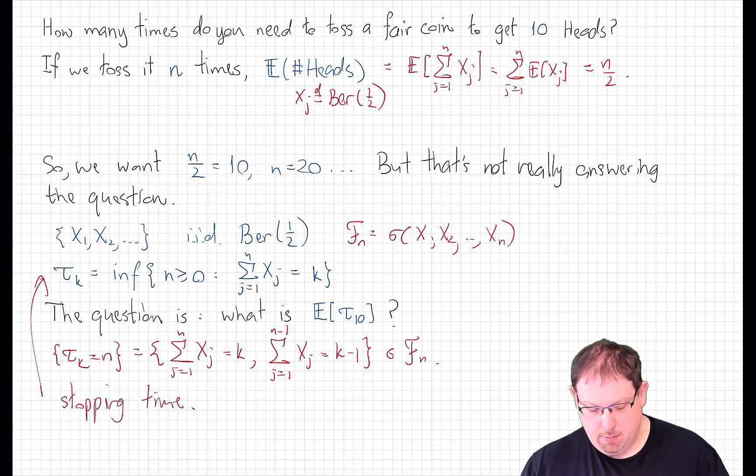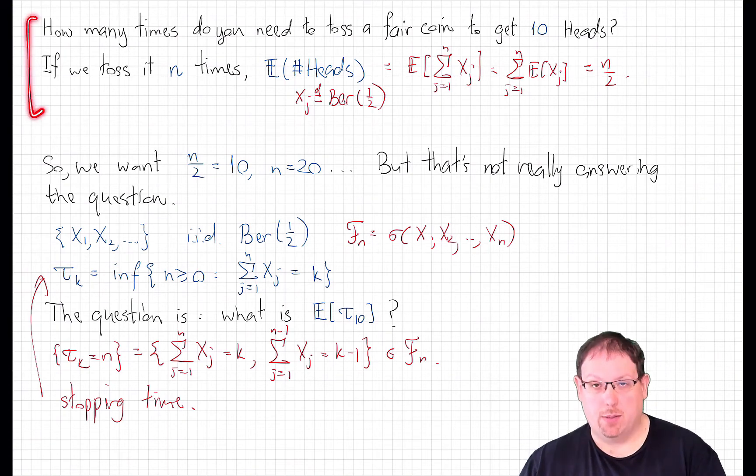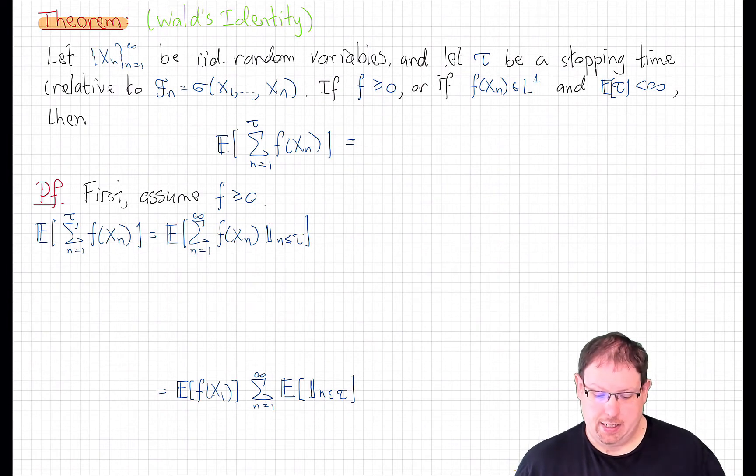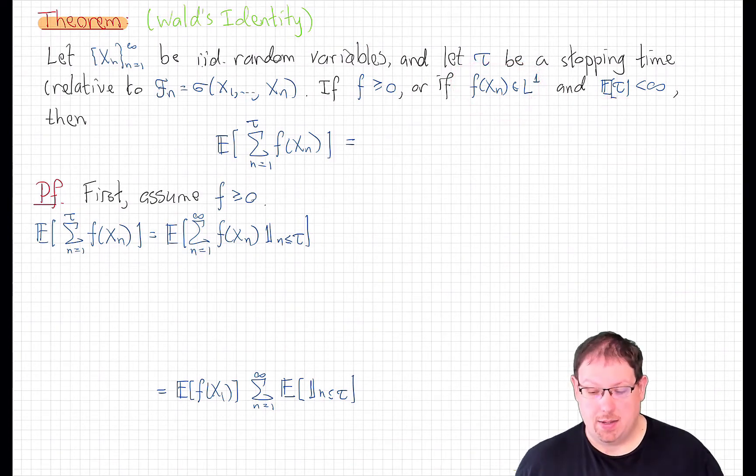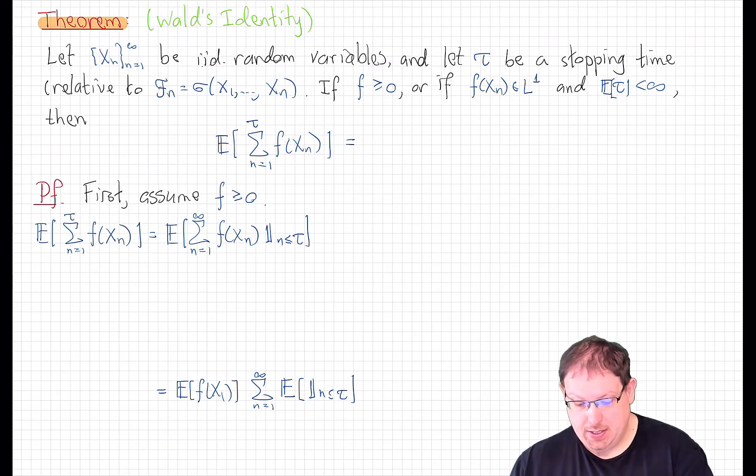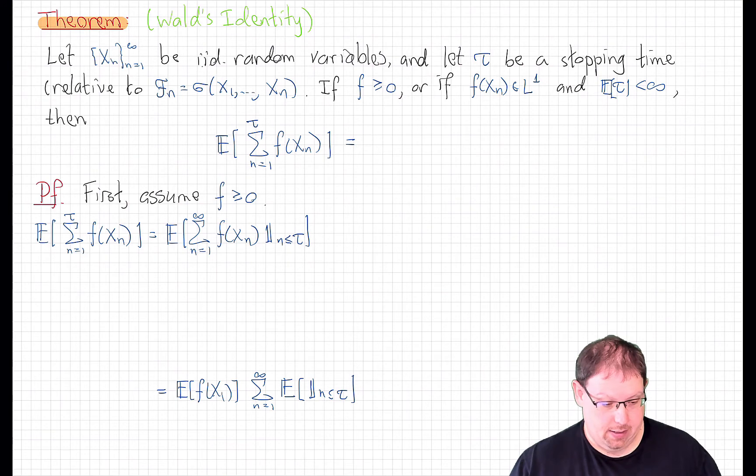Which means that the following theorem will allow us to make this argument rigorous. The theorem is called Wald's identity or Wald's equation or Wald's lemma. If xn is an iid sequence of random variables, and if tau is a stopping time relative to the filtration generated by the process xn, then if I have any function f that is either positive or such that f at xn is L1, and in that case we need to assume that the stopping time has finite expectation, then we can compute the expected value of the sum of the first tau incidences of f of x.